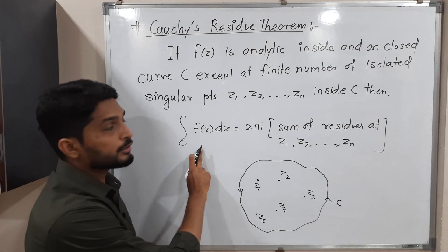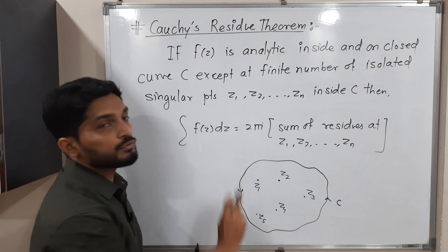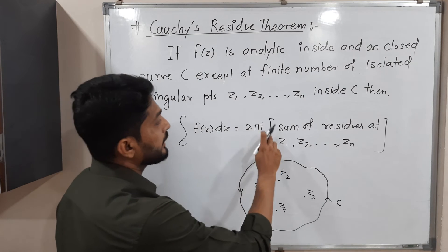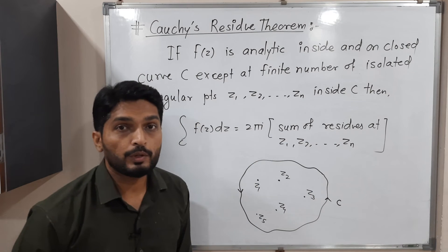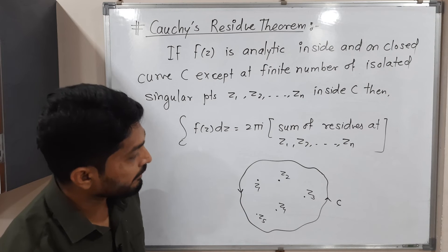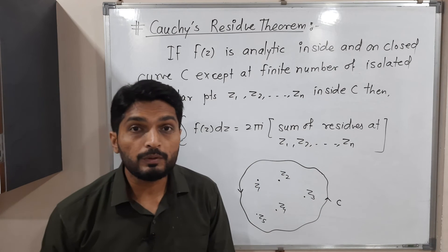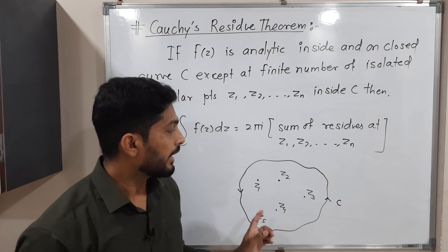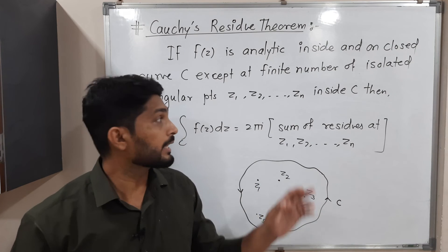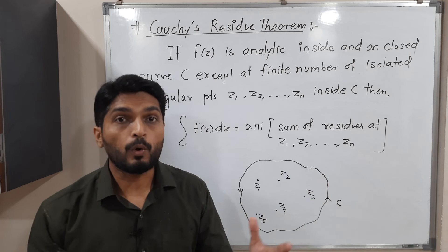we do is: if you have any function f having five singular points inside C, then we find the residue of f at each of its points. We find the residue, we take their sum, we add all these residues, and then